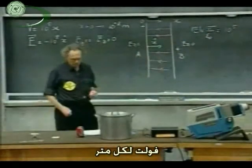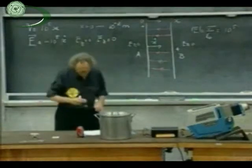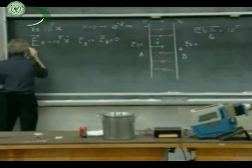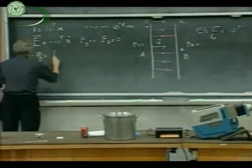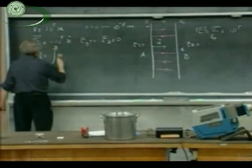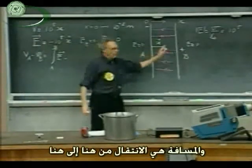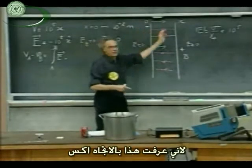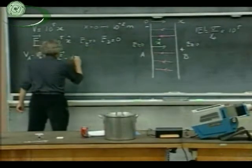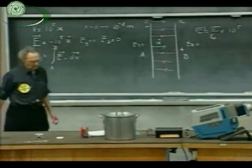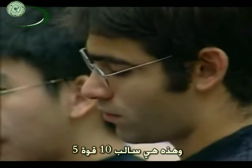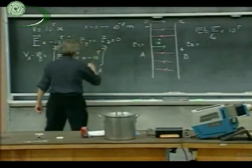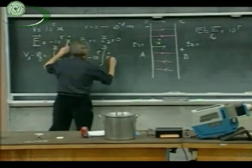The electric field is 10^5 volts per meter. What now is the potential difference? V_A minus V_B is the integral going from A to B of E dot dL. I go from here to here, so I write down for dL, I write down dX, because I call that the X direction. So this is minus 10^5 times the integral going from A to B of X-hat dot dX.